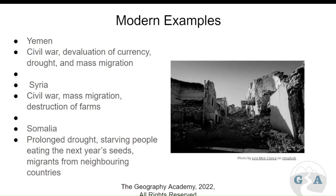Syria — again, a civil war with outside countries influencing it, what we call a proxy war. We had mass migration, destruction of farmland, and a reduction in the market. People often forget that if you have nowhere to transport your food to and you can't make any money off it, it's hard to continue to grow food for the mass population, so the food supply goes down.